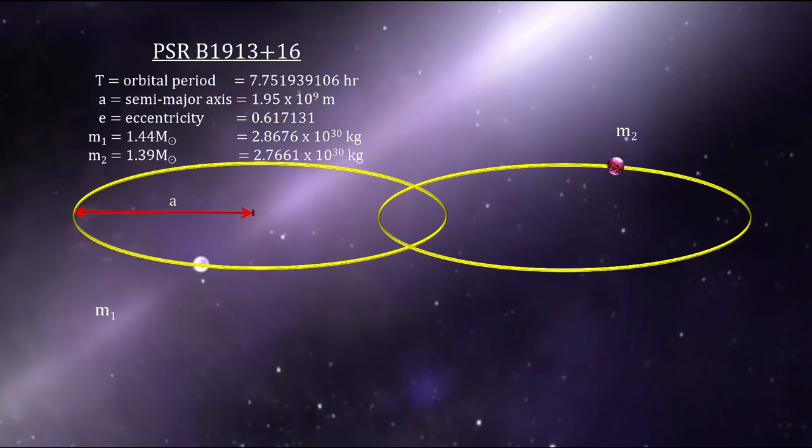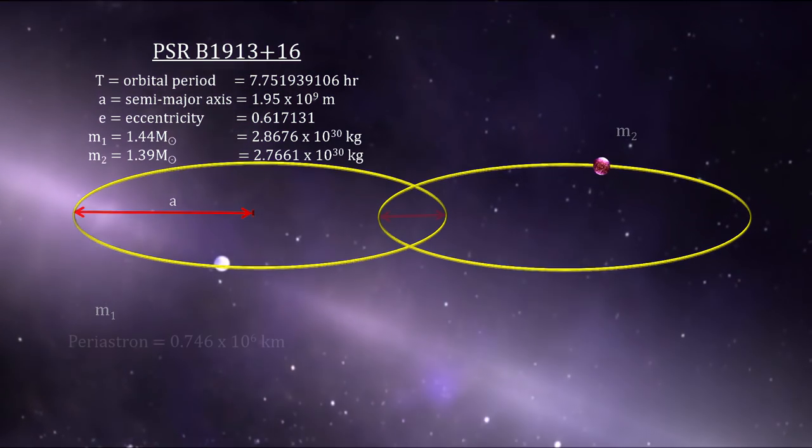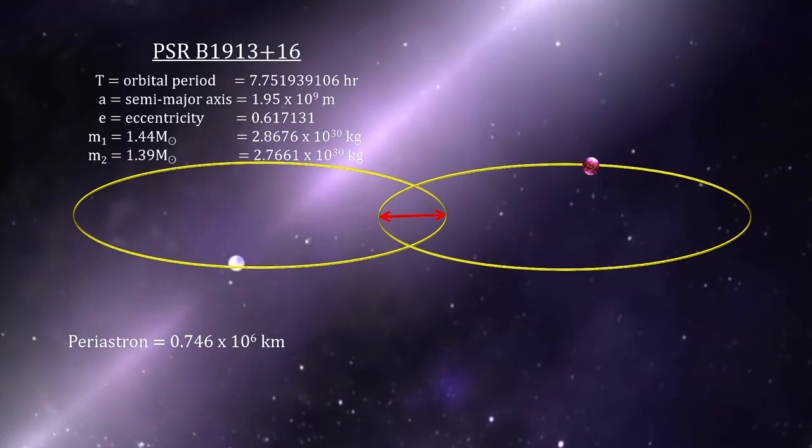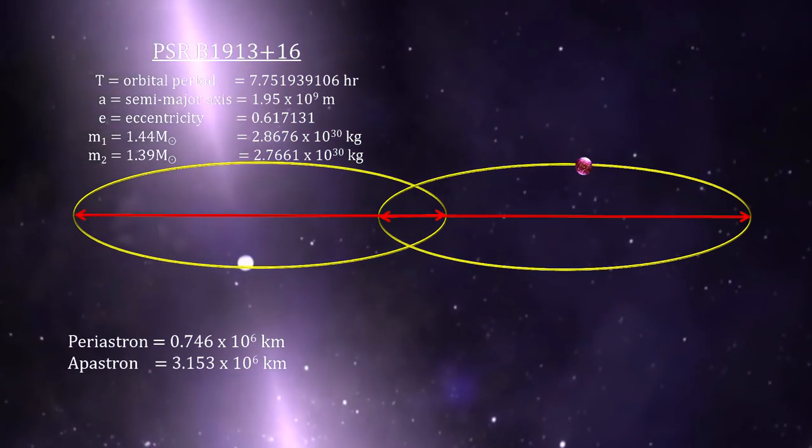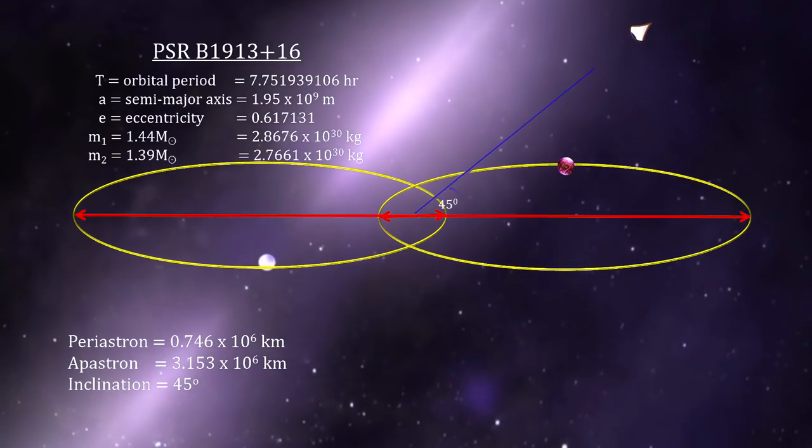Using the orbital motion, they calculated the stars' masses, their closest approach called periastron, and their furthest distance apart called apastron, as well as the system's inclination.